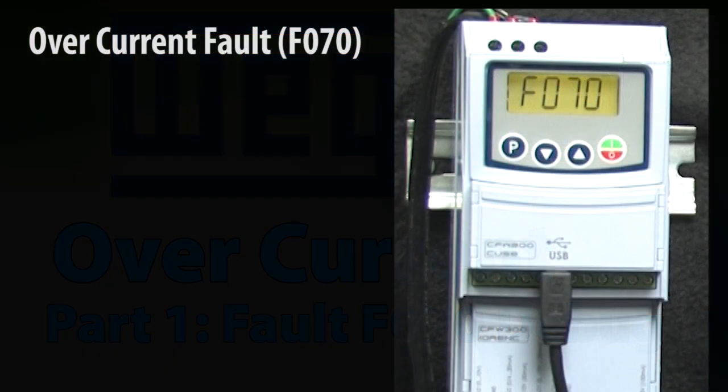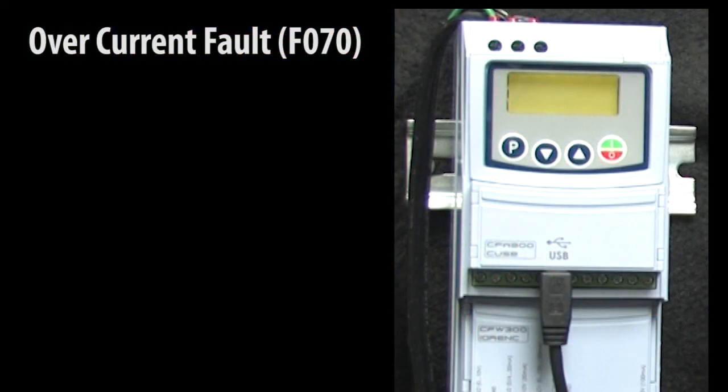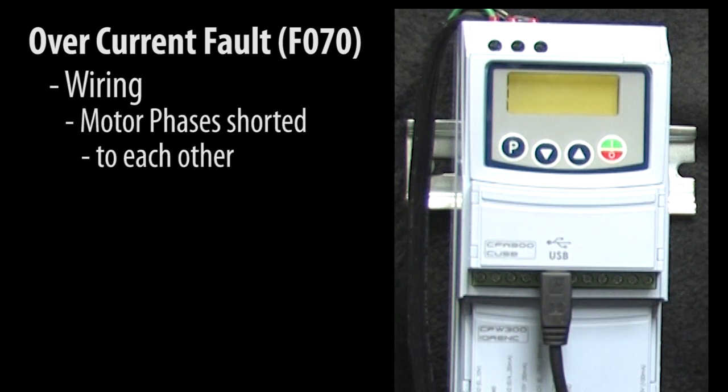There are a couple things that can cause an overcurrent fault. The most common cause is wiring—either two or more motor phases are shorted together, or a motor phase is shorted to ground.